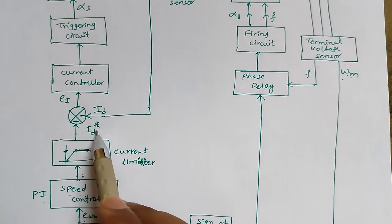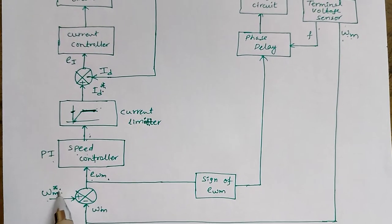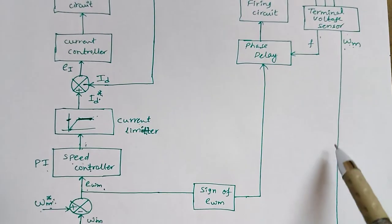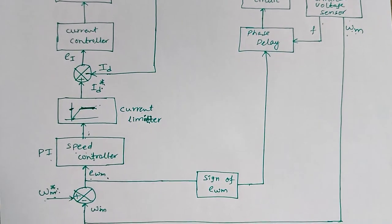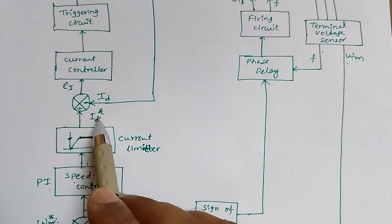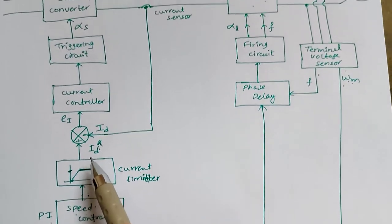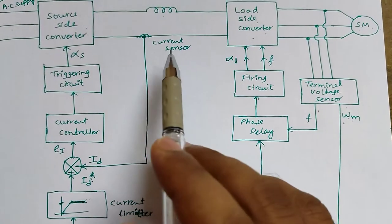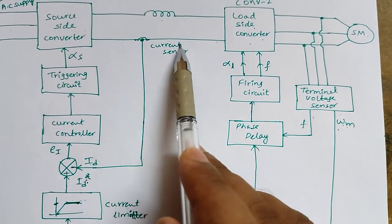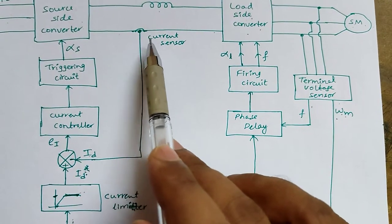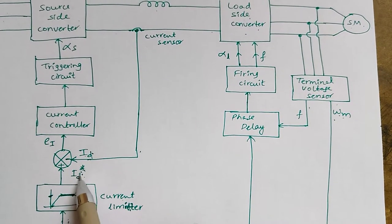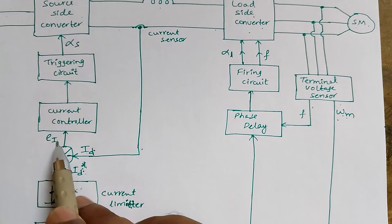So from the reference speed we obtain the reference current. The reference speed is compared with the actual speed obtained from the rotor position sensor or terminal voltage sensor. The difference gives the speed error, and by processing that error through the speed controller we get the reference current. The reference current is then compared with the actual current obtained from the DC link, where a current sensor measures the actual current. The difference between the reference current and actual current gives the error in current.